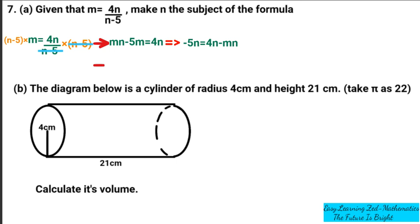The next thing is to factorize. We factorize the two terms on the right side. What is common in 4n and mn? They both have n. So we take n as the common factor: negative 5m is equal to n open bracket, n into 4n goes 4 times, and n into negative mn goes negative m times, giving us n(4 minus m).